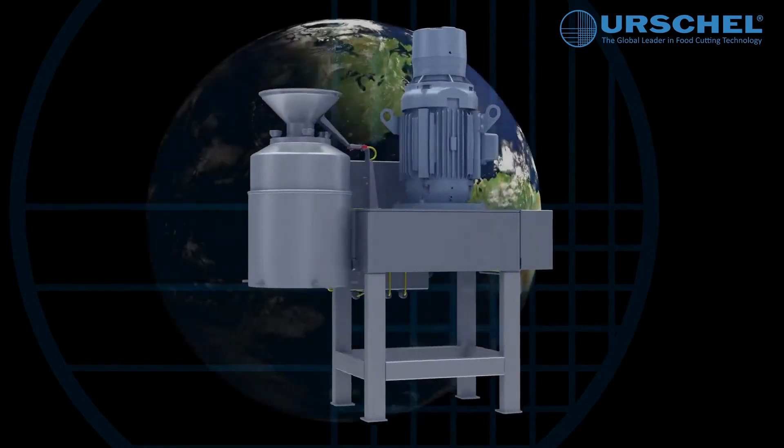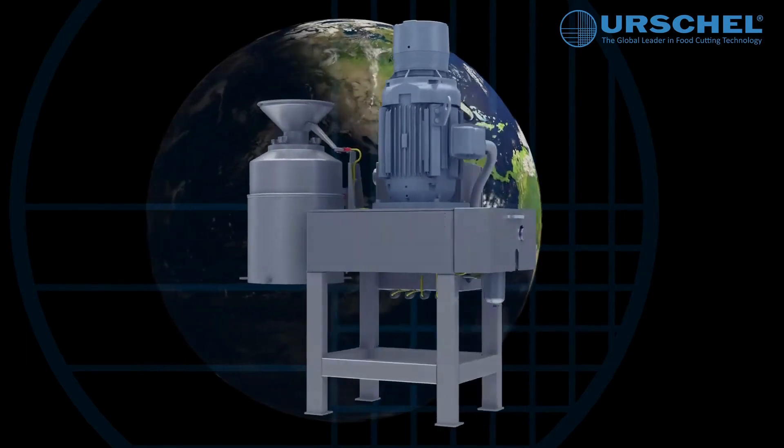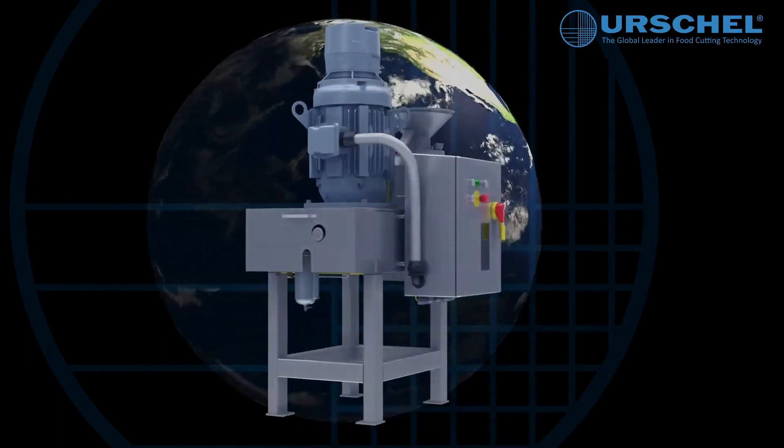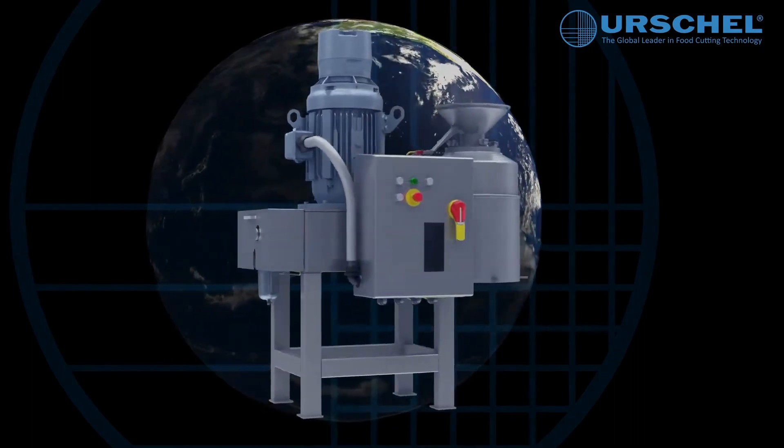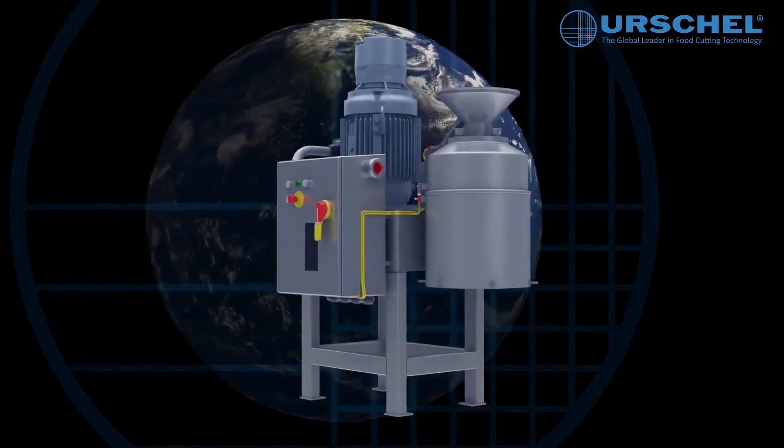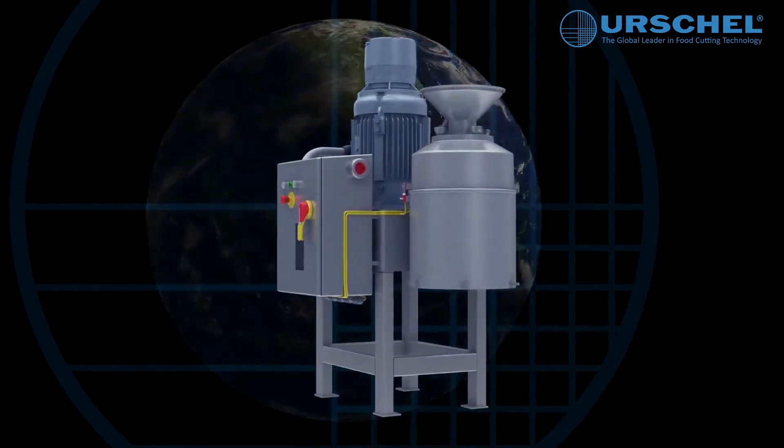Around the world, beverage, bakery, snack, confectionery, fruit, vegetable, dairy, meat, poultry, fish, chemical, and pharmaceutical industries have relied upon the Commitrol Processor Model 1700 to maximize their productivity and efficiency.